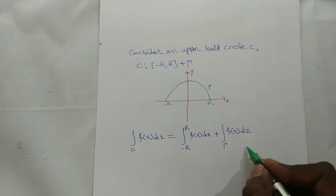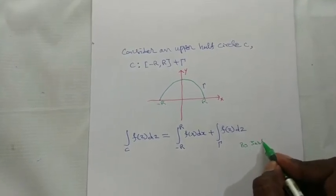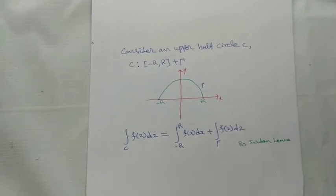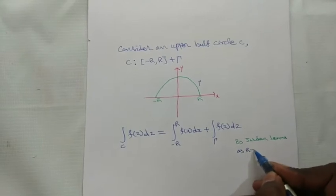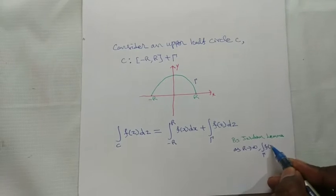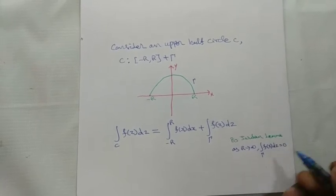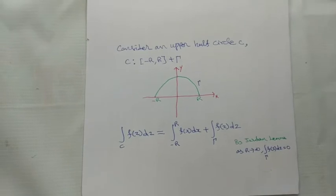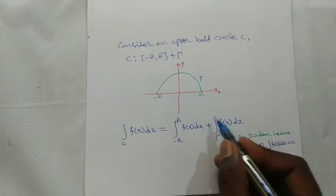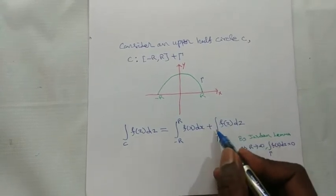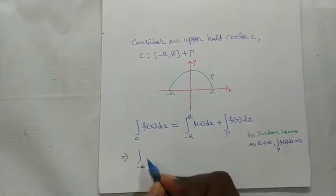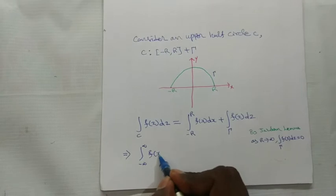By Jordan's Lemma, as R tends to infinity, the integral over gamma of f(z)dz equals zero. Substituting this, as R tends to infinity the limits become minus infinity to plus infinity, and the gamma integral vanishes.